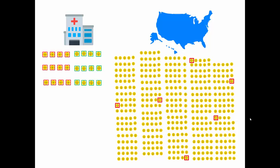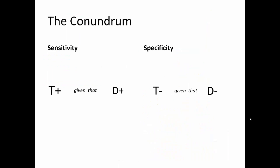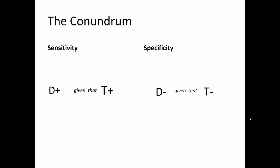Part of this stems from a misinterpretation of what sensitivity and specificity are. Sensitivity is the probability that you will test positive given that you have the disease. The truth is that most people interpret it as the opposite — namely, the probability that you have a disease given that you've tested positive. That's not what sensitivity is. The same thing applies to specificity: specificity is the probability that you will test negative given that you don't have the disease, but people think it's the probability that you don't have the disease given that you've tested negative.